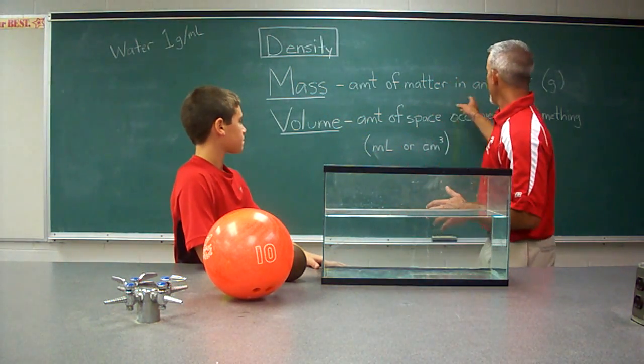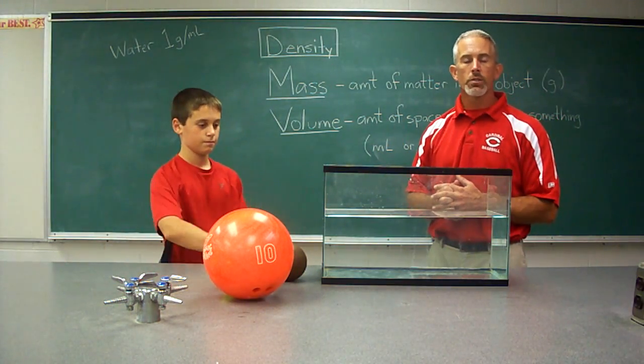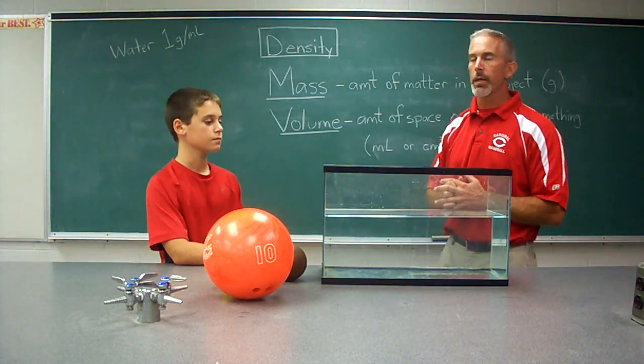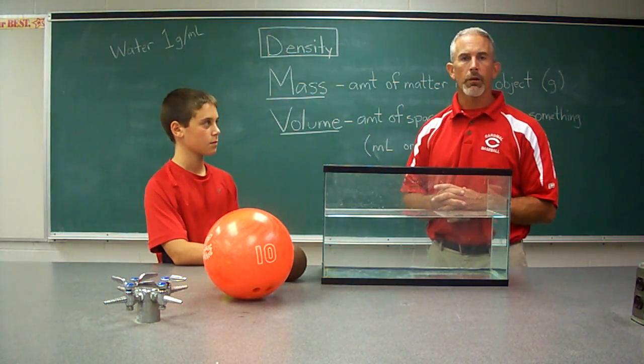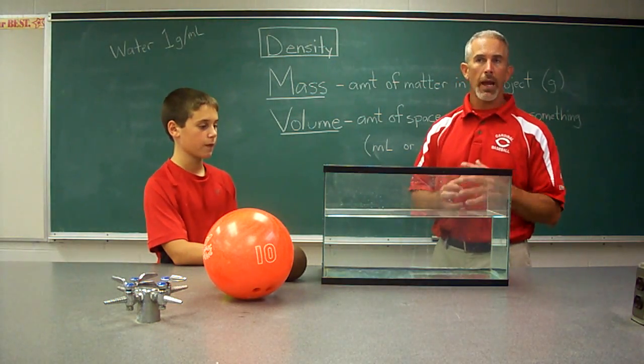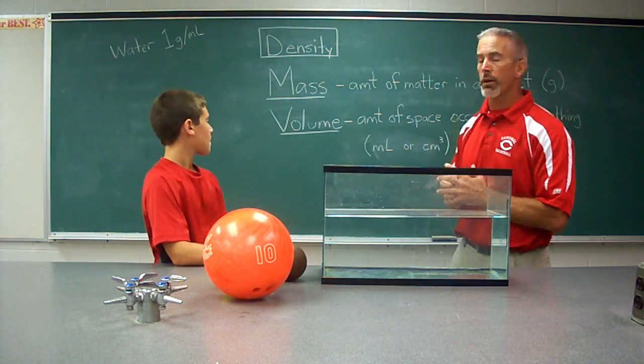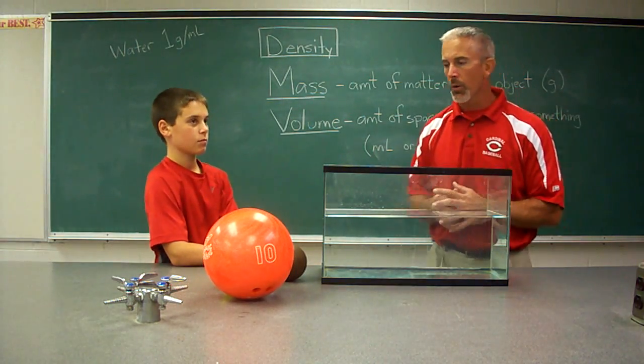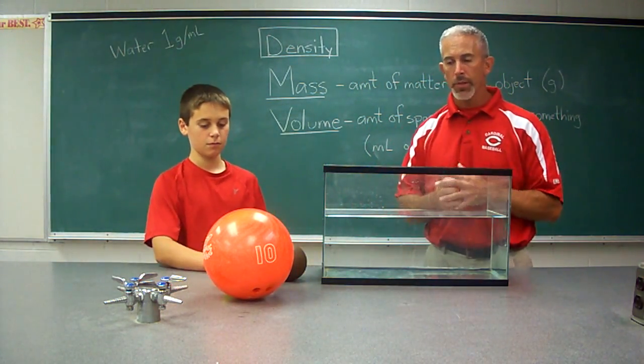Since mass is measured in grams typically, and volume is measured in milliliters or cubic centimeters, we could say that for every one gram of water, it's going to take up one milliliter of space. Or if we have one milliliter of water, it's going to have a mass of approximately one gram. So one gram per milliliter is the density of water. We've got four different objects here that we're going to have Zachary predict and then put in the tank